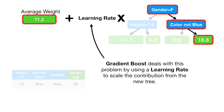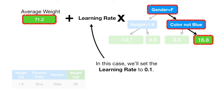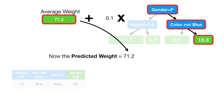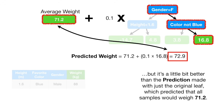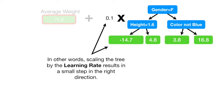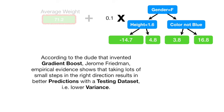Gradient Boost deals with this problem by using a learning rate to scale the contribution from the new tree. The learning rate is a value between 0 and 1. In this case, we'll set the learning rate to 0.1. Now the predicted weight equals 71.2 plus 0.1 times 16.8, which equals 72.9. With the learning rate set to 0.1, the new prediction isn't as good as it was before, but it's a little better than the prediction made with just the original leaf, which predicted that all samples would weigh 71.2. In other words, scaling the tree by the learning rate results in a small step in the right direction.